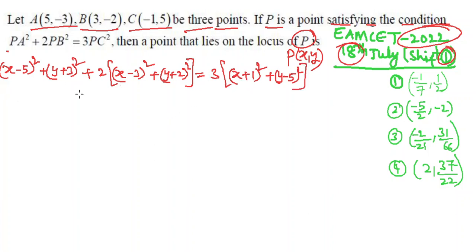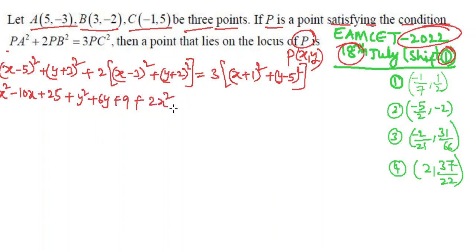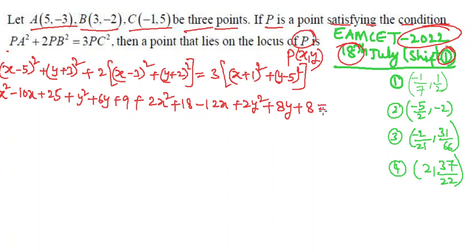Expanding (x−5)² gives x²−10x+25. Then (y+3)² gives y²+6y+9. For 2PB², expand 2(x−3)² to get 2x²−12x+18, and 2(y+2)² gives 2y²+8y+8. On the right side, 3(x+1)² gives 3x²+6x+3, and 3(y−5)² gives 3y²−30y+75.